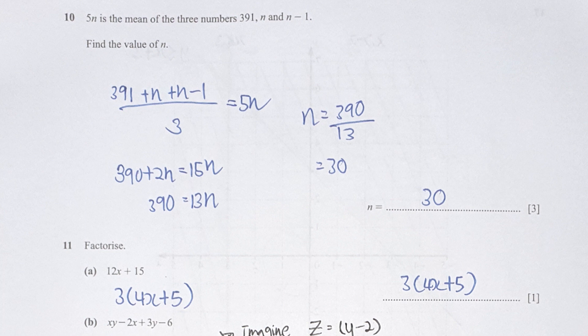Question 10: 5n is the mean of three numbers: 391, n, and n minus 1. So 391 plus n plus n minus 1 over 3 equals 5n. After the calculation, you should get n equals 30.